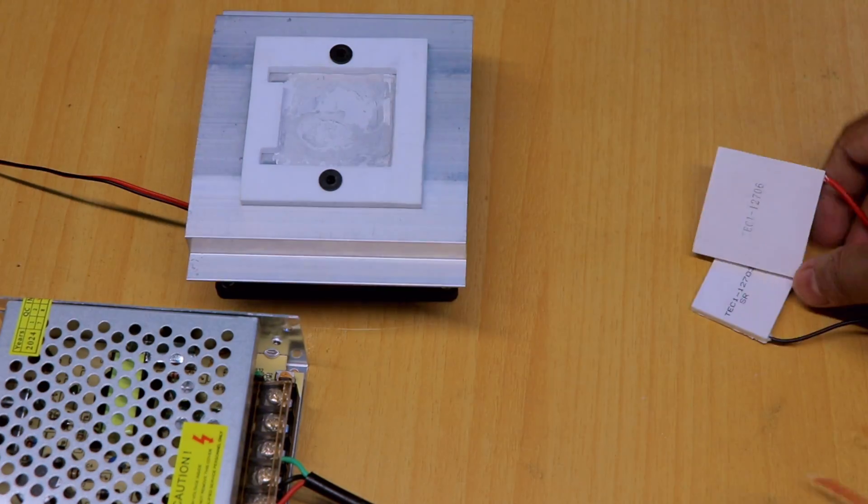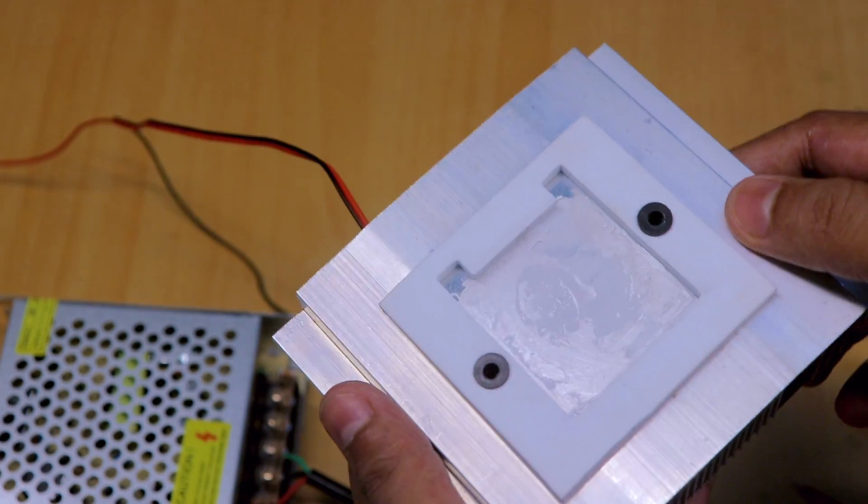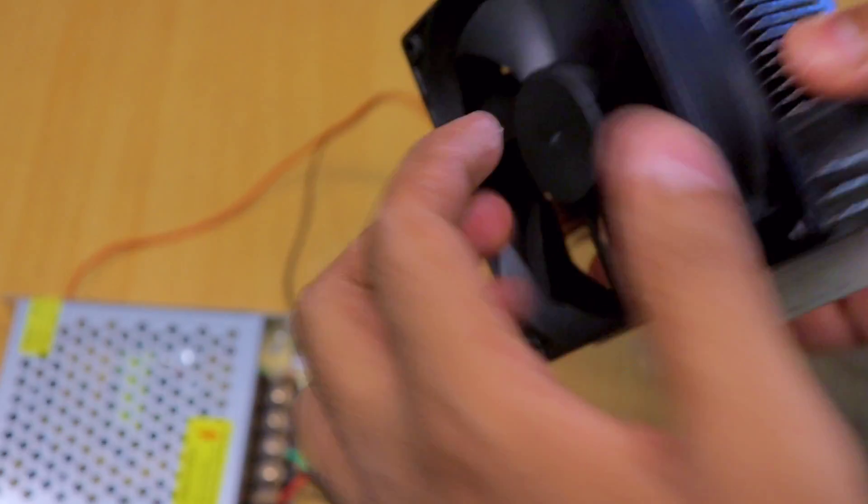For this purpose I have this test bench. This is basically a heatsink which will handle the heat generated by the Peltier module, and this is the fan which blows air to the heatsink to cool the Peltier down.